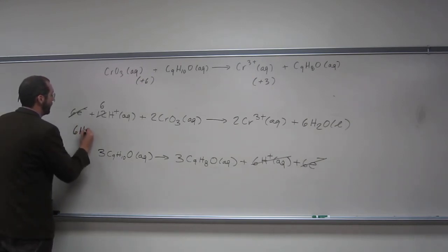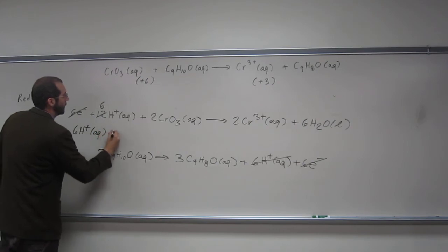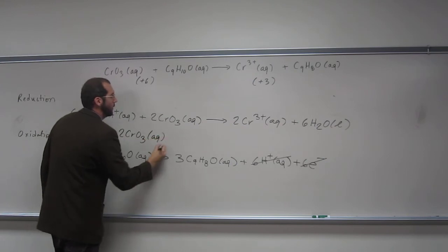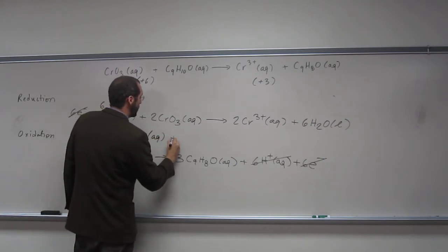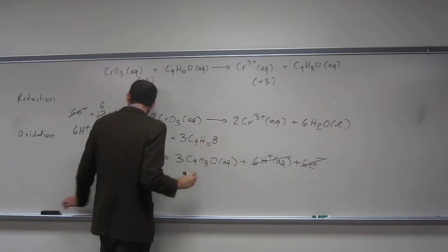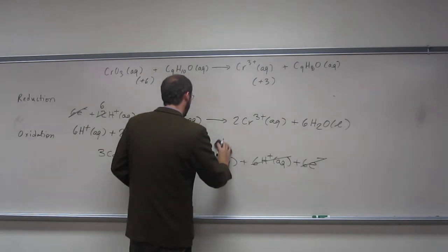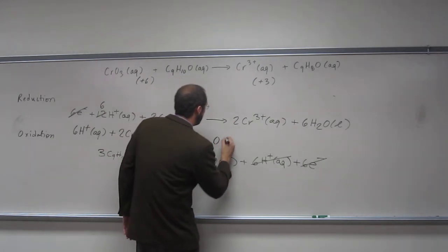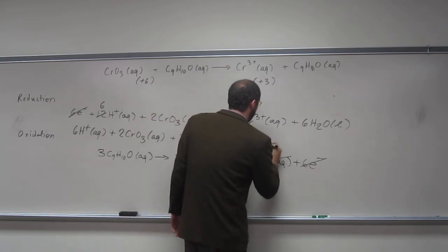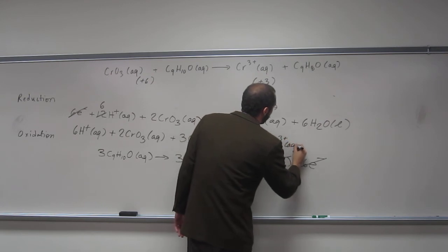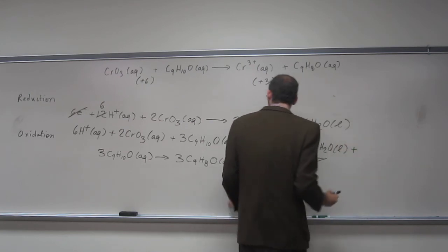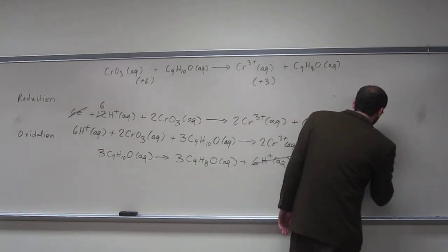Now we combine the overall reactions. The overall reaction is 6H+ (aq) plus 2CrO3 (aq) plus 3C9H10O (aq) goes to 2Cr3+ (aq) plus 6H2O (l) plus 3C9H8O (aq).